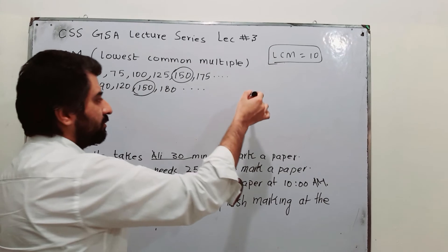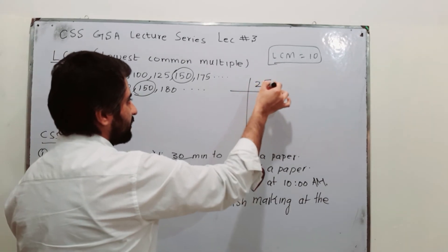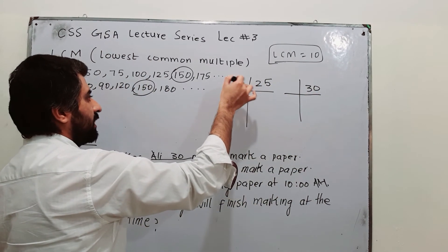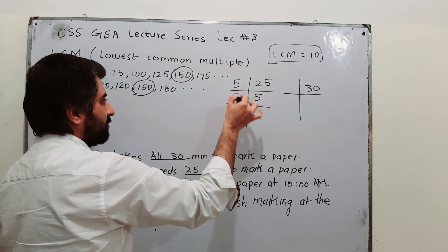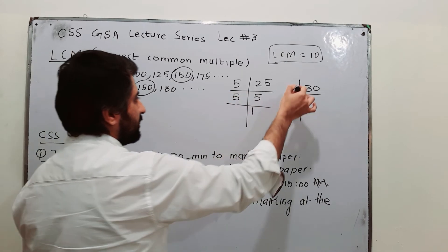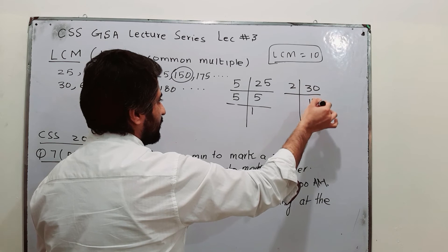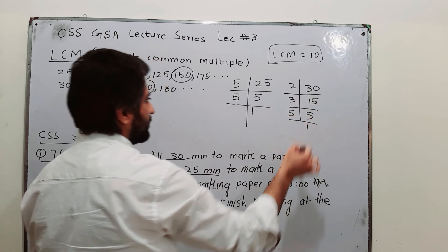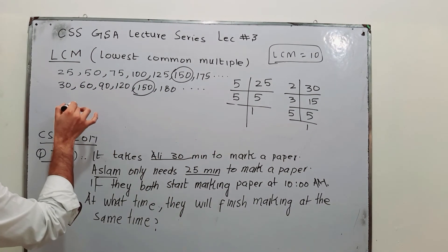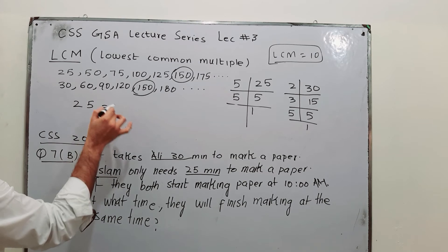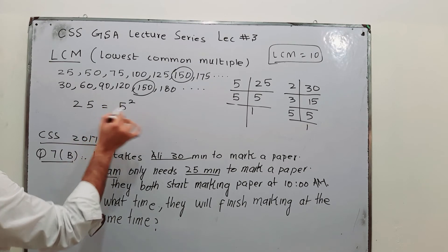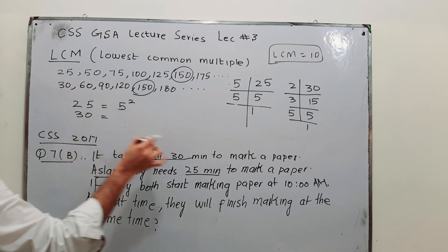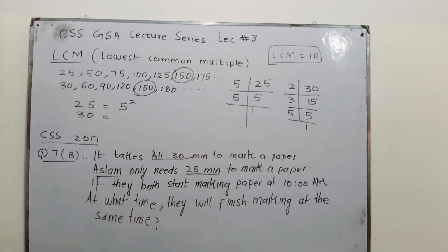Now let us use the second approach — prime factorization of 25 and 30. For 25: 5 times 5 equals 25, so 25 = 5². For 30: 2 times 15, then 3 times 5, so 30 = 2 × 3 × 5. Expressing these in index notation as a product of prime factors: 25 = 5² and 30 = 2¹ × 3¹ × 5¹.